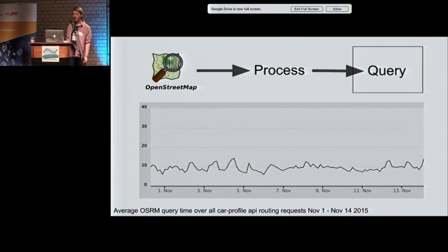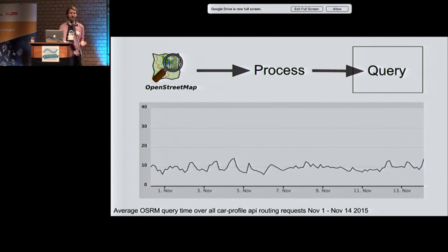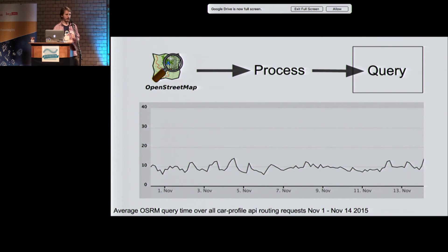The query time of OSRM is very fast. Over a two-week period, the average response time from OSRM itself is around 10 milliseconds. This means it is super efficient and really fast. The fact that it's so incredibly fast enables us to build all the other features on top — distance tables, solving the traveling salesman problem — and build a product at a scale and price point that makes commercial sense.